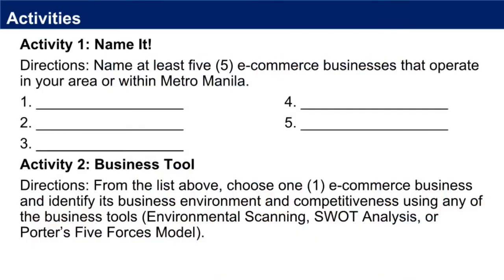For your activities: Activity number one, name at least five e-commerce businesses that operate in your area or within Metro Manila. Activity number two, from the list above, choose one e-commerce business and identify its business environment and competitiveness using any of the business tools: environmental scanning, SWOT analysis, or Porter's Five Forces model. You may answer this after watching the video.